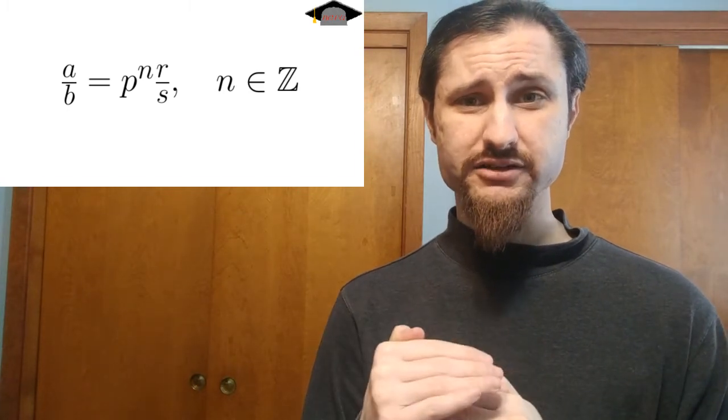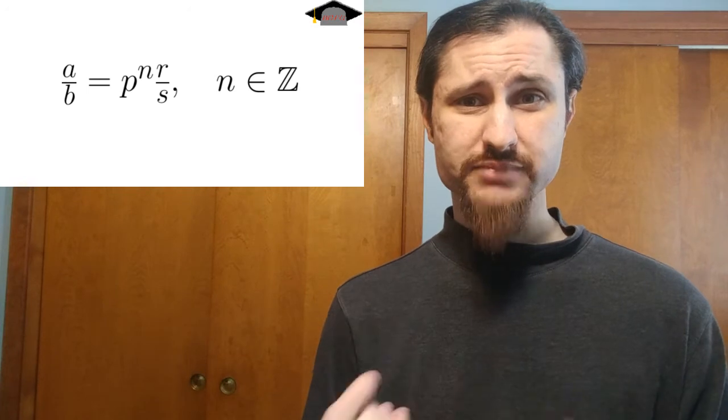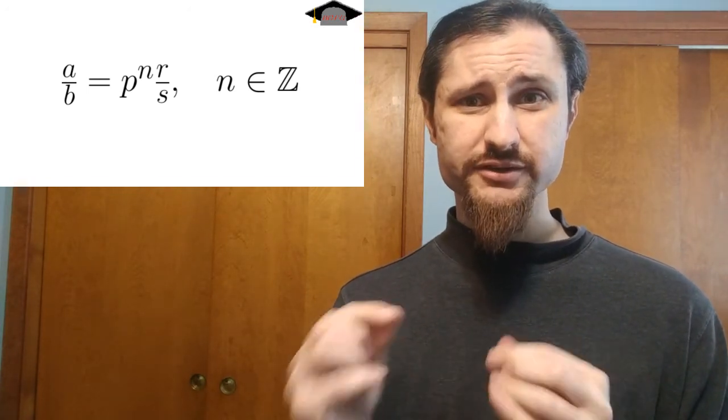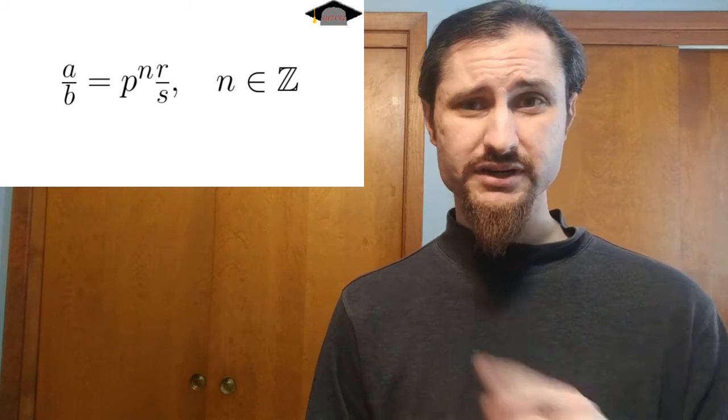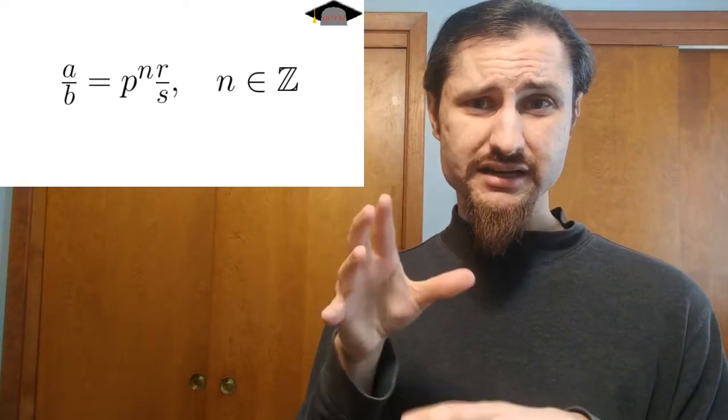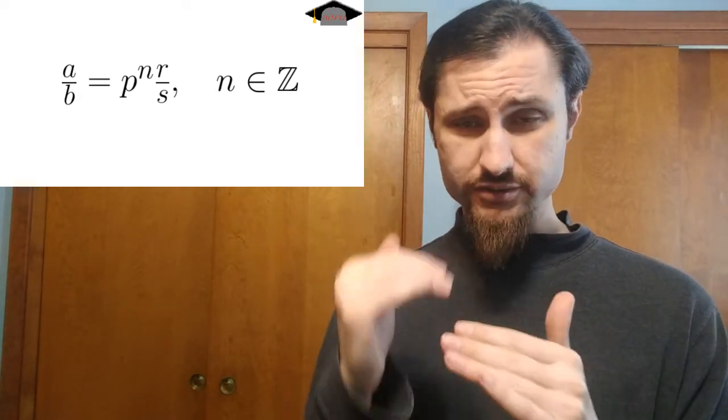Remember, we have the unique factorization of all integers in terms of the products of primes. So that's really helpful here. Once you've done that and you've written it in this form here where you have P to some exponent, could be positive, could be negative, depending on whether you have factors of P in your numerator or denominator.